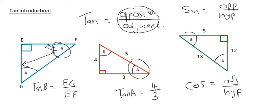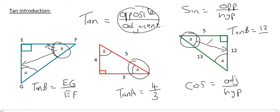And then the tan of B in this green triangle would be 12, because that's the opposite, over the adjacent, which is 5.